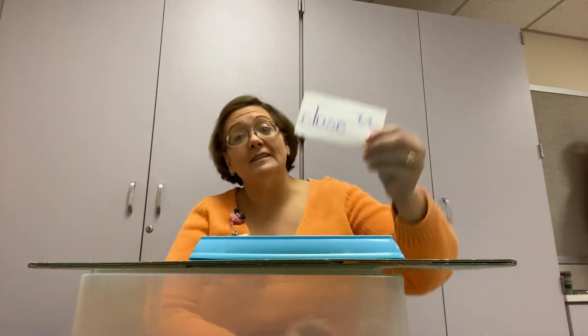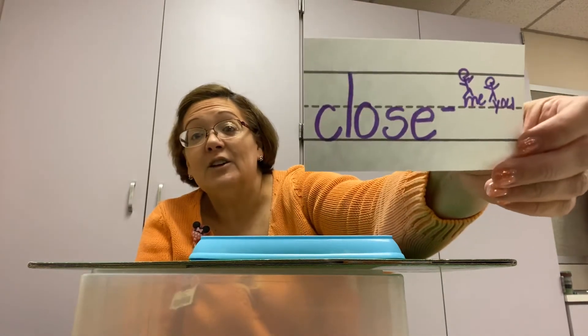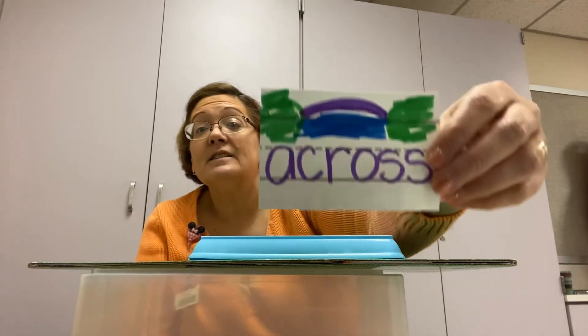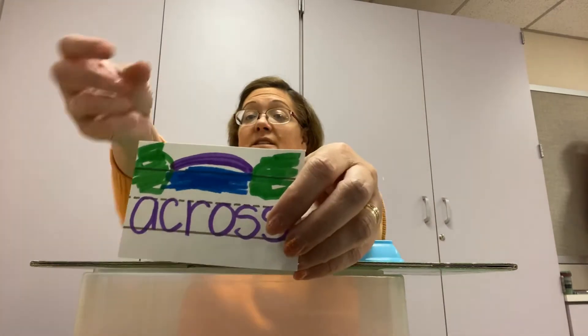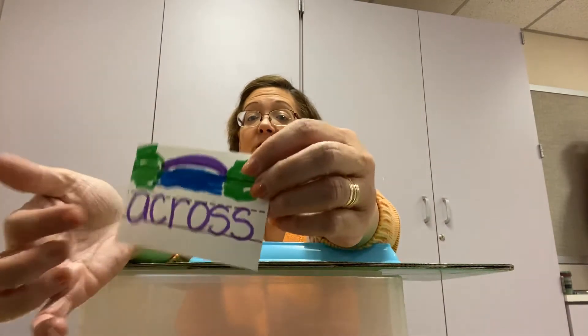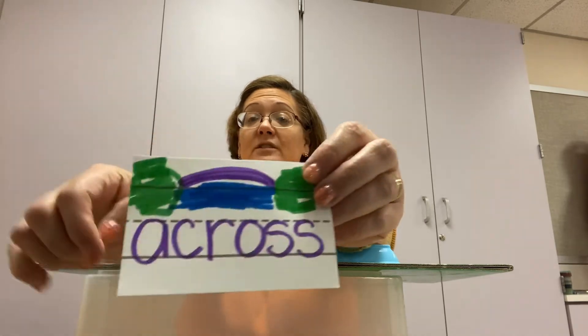'Close' is another one of my words — hey, there's that C right there. We are talking about C this week. Close means really next to each other, almost. And then 'across' — I drew some land with some water and drew a bridge over it to go across the water.